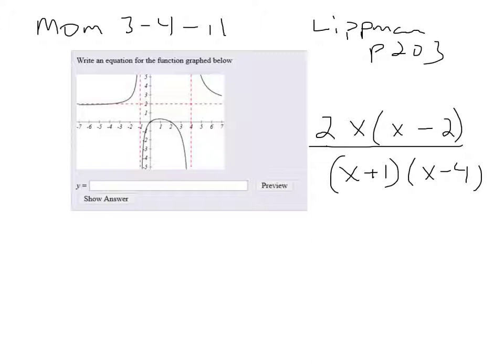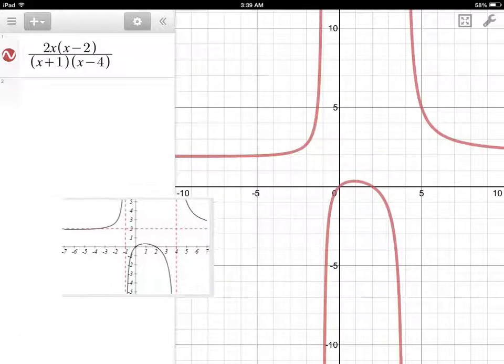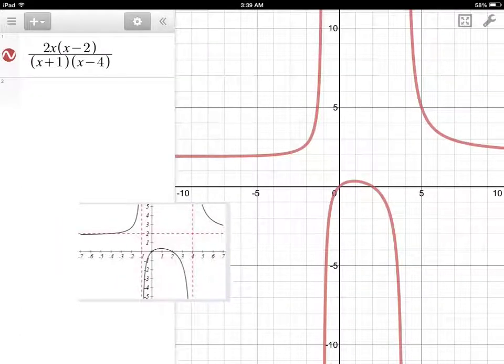I'll go graph the one I created just to check. I went to desmos.com and graphed the function I came up with. I'm seeing a vertical asymptote at x equals 4 and at x equals negative 1, the horizontal asymptote at y equals 2, and those two zeros. I believe I've got an equation that works.